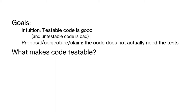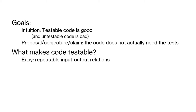So what makes code testable? Let's see what our experience said from our little code slide. The easy things are these repeatable input-output relations — there is no hidden state, no things we need to assume the values of, no interactions with other parts. Just straight input-output relations.